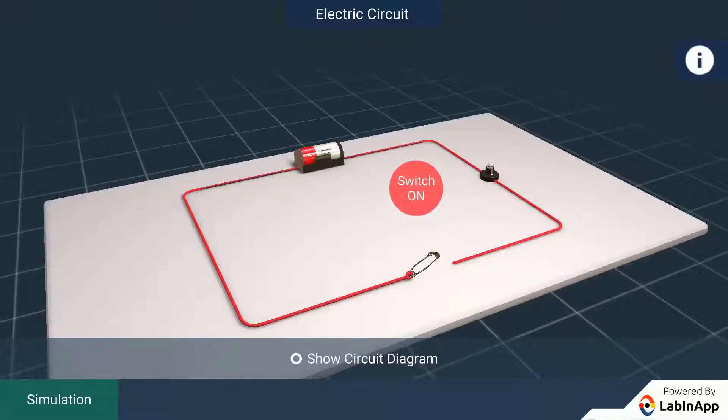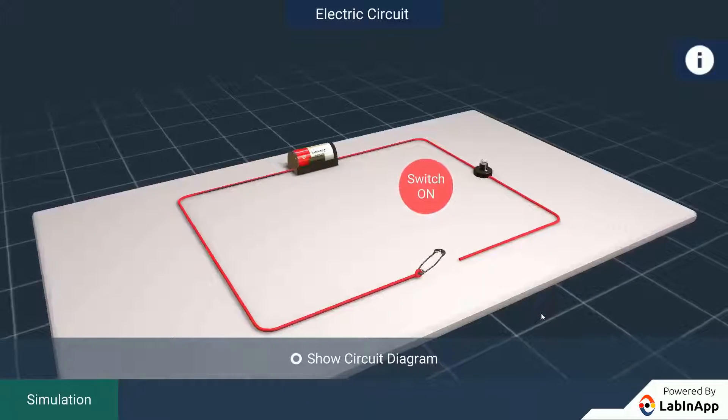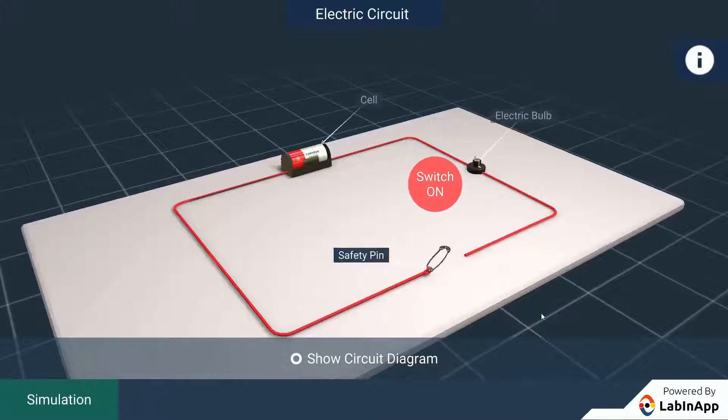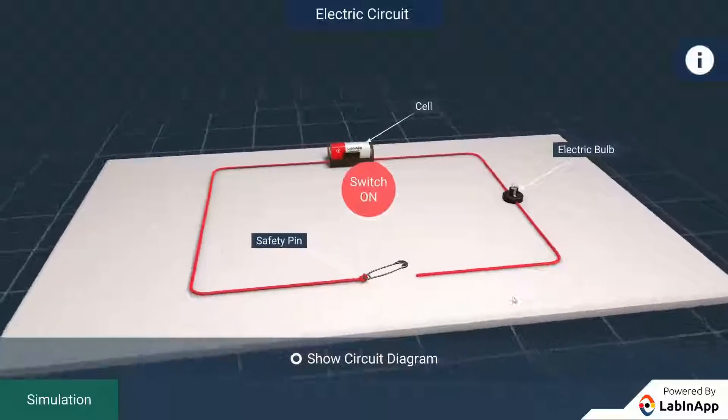Let us make an electric circuit using battery or cell, safety pin, wires and a bulb.